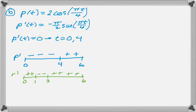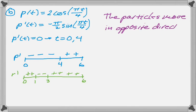And now I can actually just look at it, and I can see any time these two number lines have opposite signs, the particles are moving in opposite directions. So I can tell they're moving in opposite directions on 0 to 1, and so 0 to 1 and also 3 to 4.